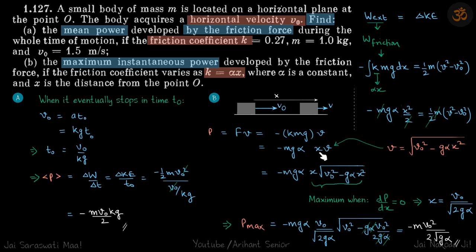If we can find the velocity v as a function of x, then we can find the relation between power and x, and then we can maximize it.